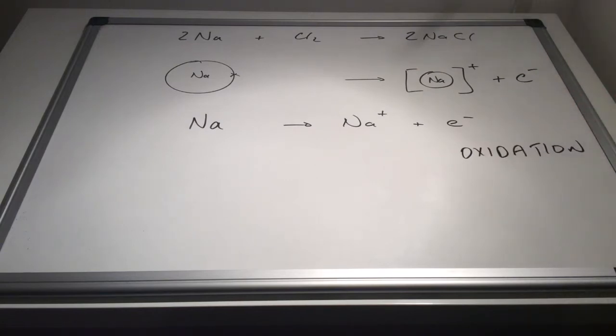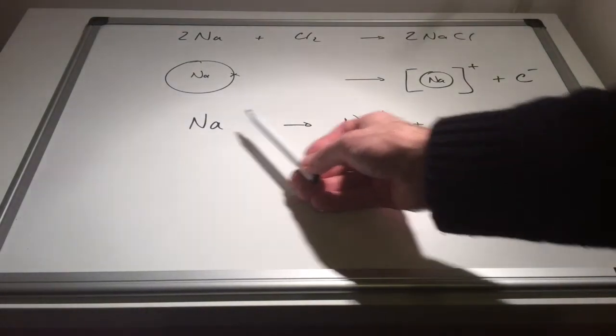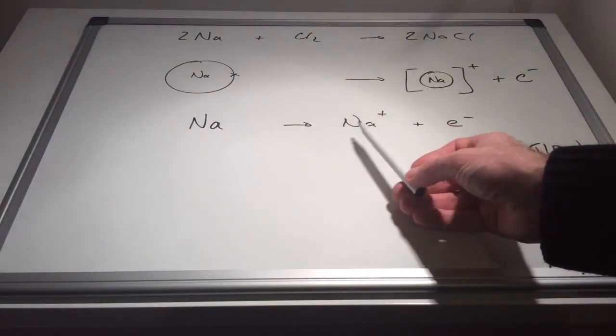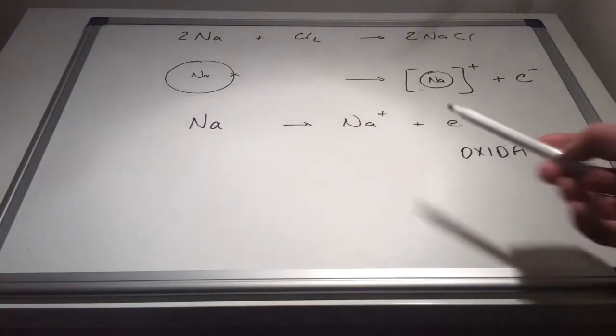So in terms of electrons, what is oxidation? Well oxidation is the loss of electrons. So we can say that sodium has been oxidised to sodium plus by losing the electron.